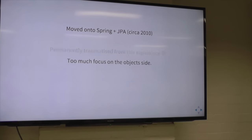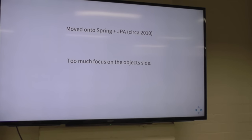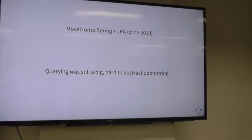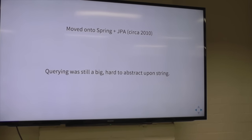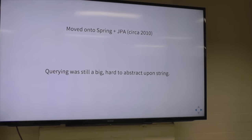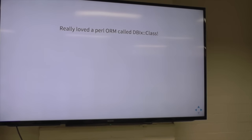Sorry if there's any JPA devs here. From my perspective, there's really too much focus on the object side and a lot of the SQL-ness gets lost. Even so, the queries are either these ginormous, disgusting Java objects, or you're still dealing with strings that are really hard to abstract and compose on. It had a lot of merit and I really enjoyed parts of JPA, but it just lost some awesome parts.